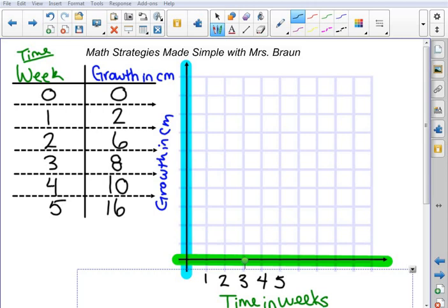Because I'm counting up to the 5th week. Along the side, I need to get to 16, so I'm going to have to scale my lines a little bit. I'm actually going to count by 2 so I can show the growth all on this one graph.